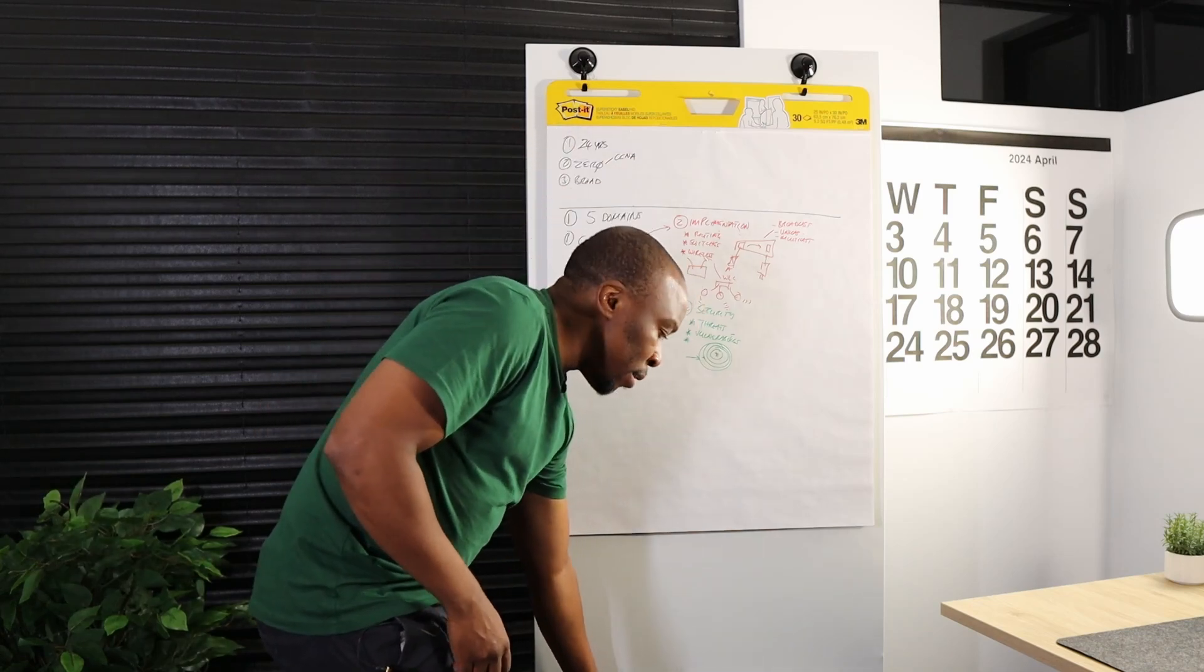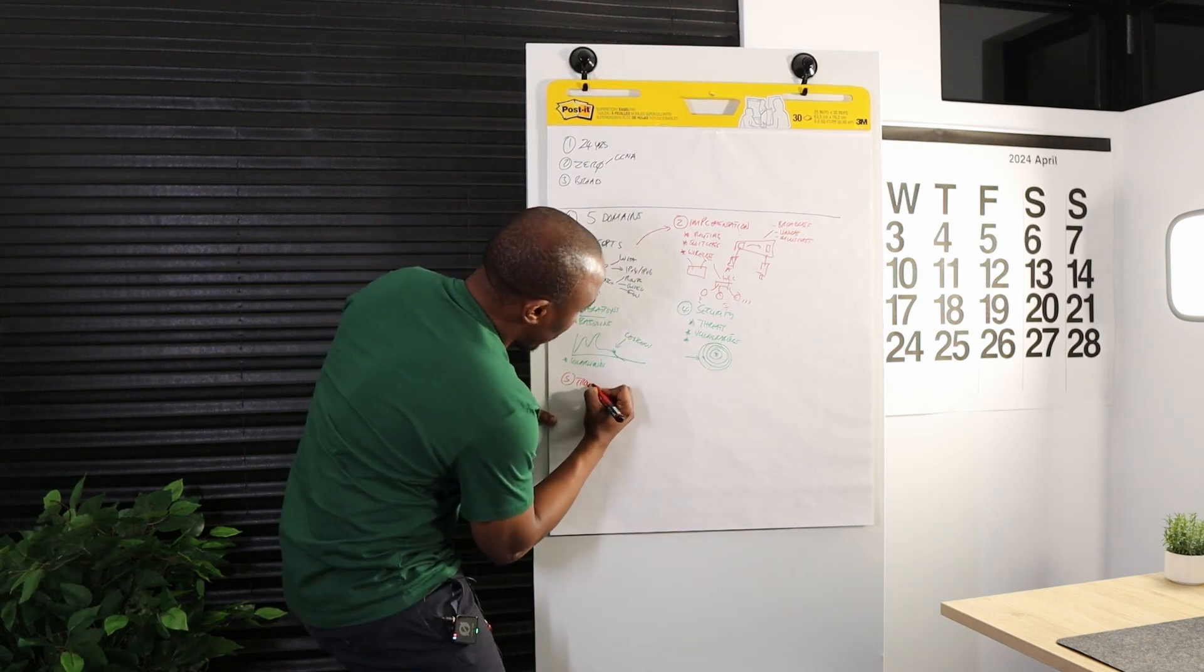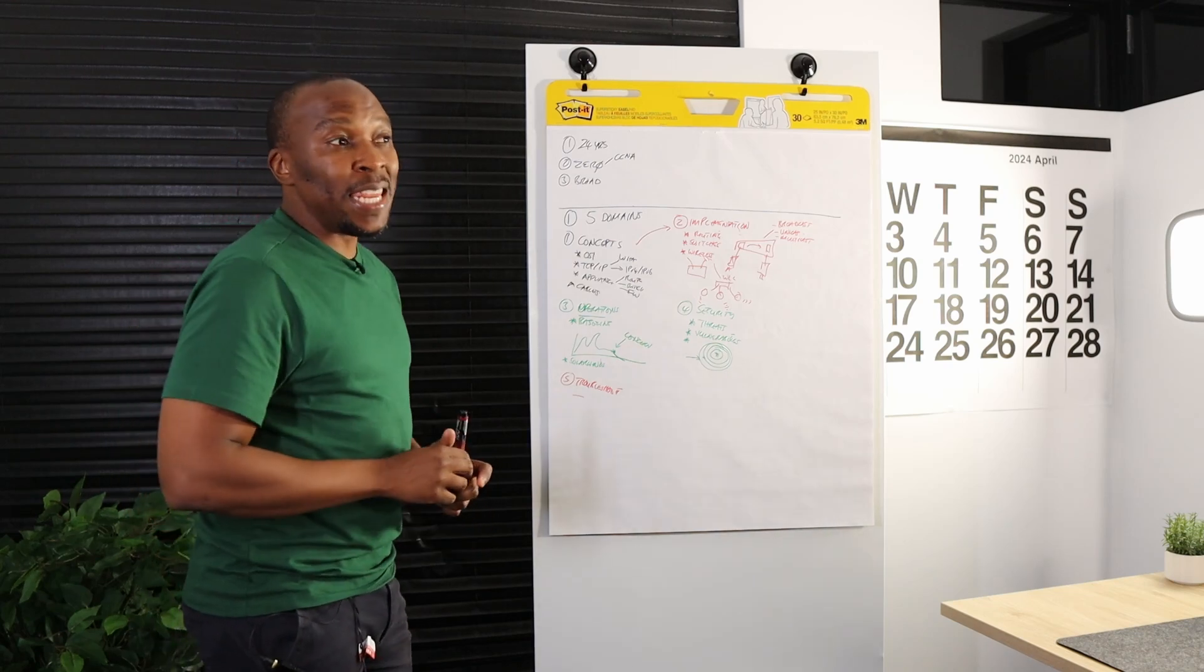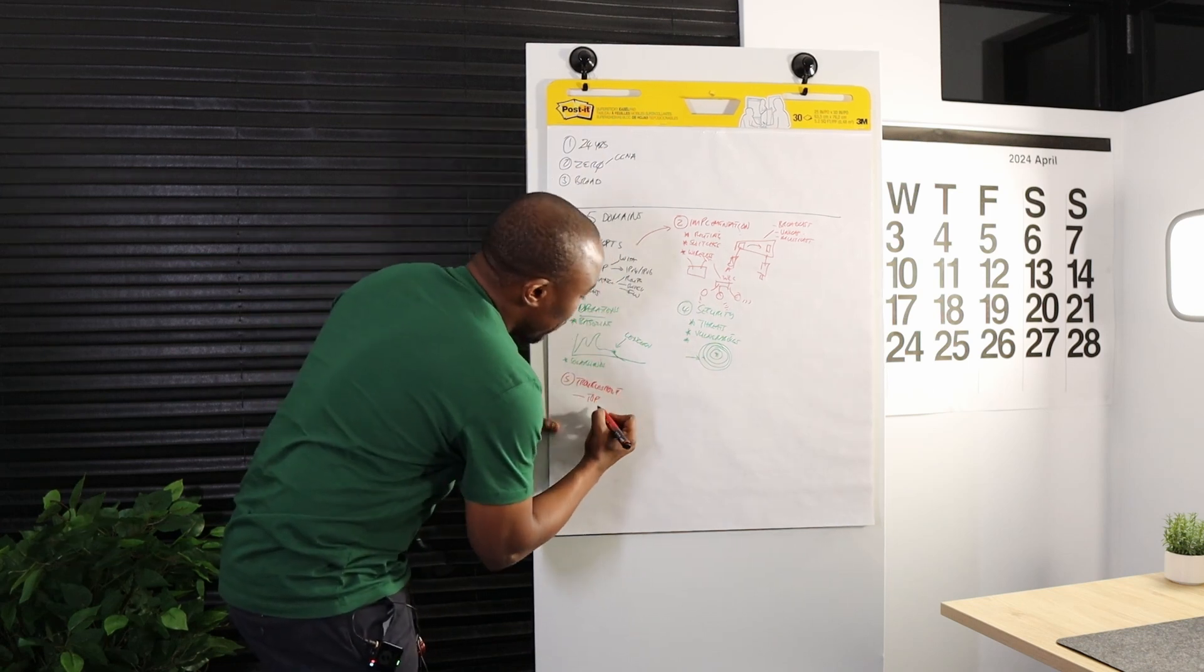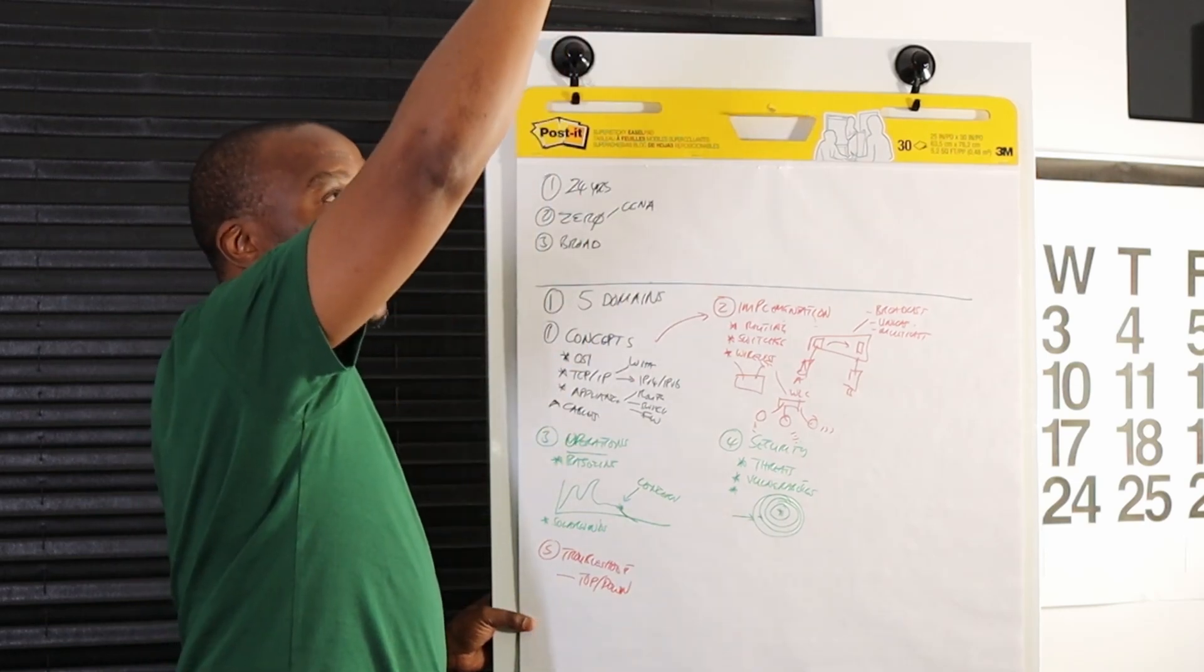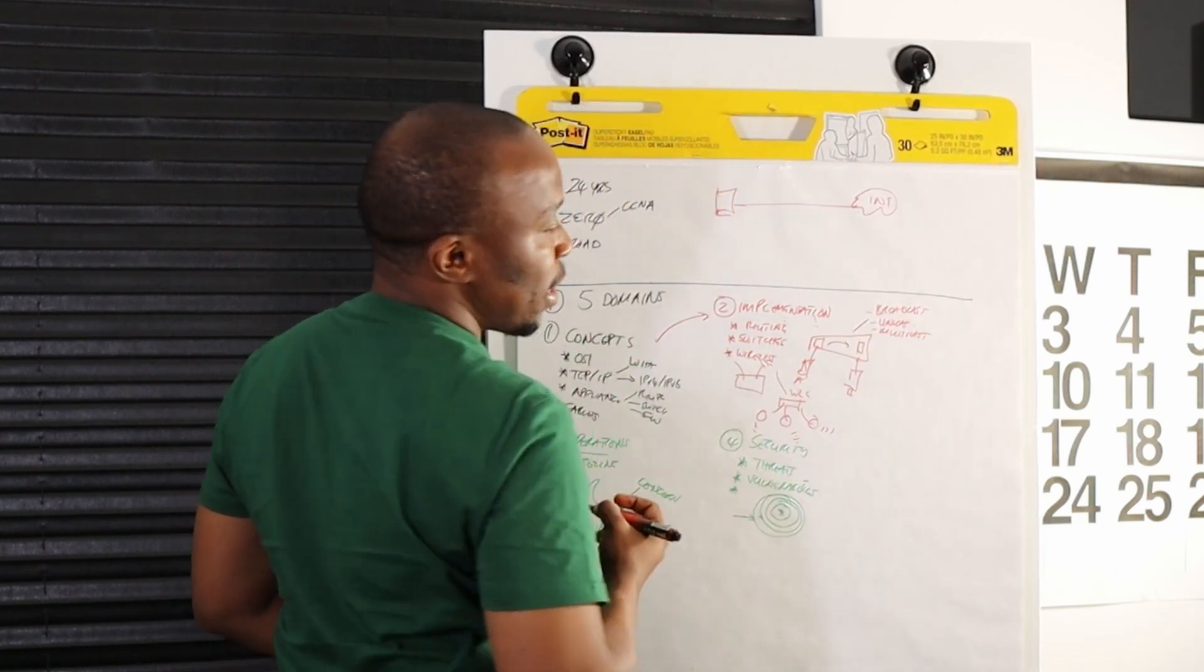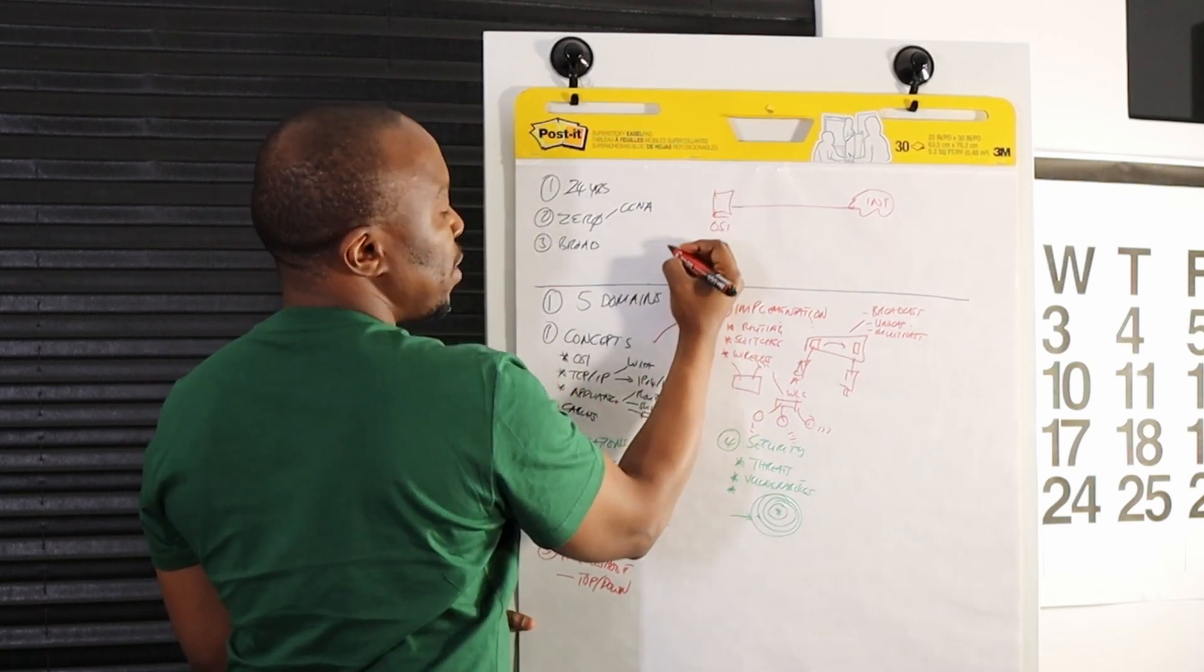The last part is network troubleshooting. We need to learn how to troubleshoot our networks. We're going to learn the different methodologies that we can implement to troubleshoot our network. I'll talk about two. You have the top-down approach, which means that when something is down, you start from the top and try and figure out what is wrong. So if a PC can't access the internet and I'm taking a top-down approach based on the OSI model, I'm going to look at the application.